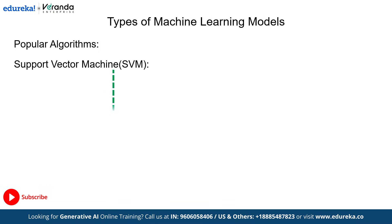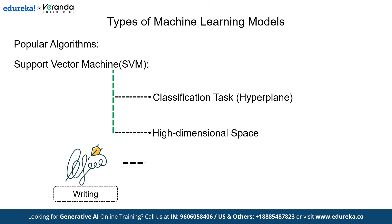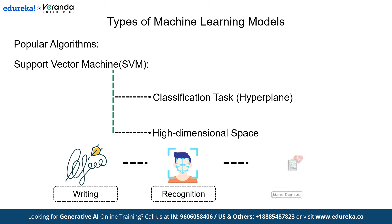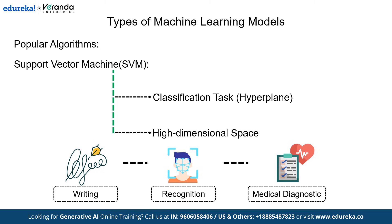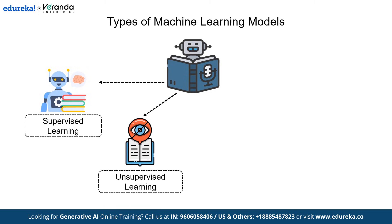Next is support vector machines. SVMs are powerful for classification tasks, as they find the optimal boundary — also called a hyperplane — that best separates different classes in the data. They work well for high-dimensional spaces and cases where the distinction between categories is clear, such as handwriting recognition, facial recognition, or medical diagnosis. Now that we've seen how labeled data is used, let's explore how unsupervised learning finds patterns without labels.